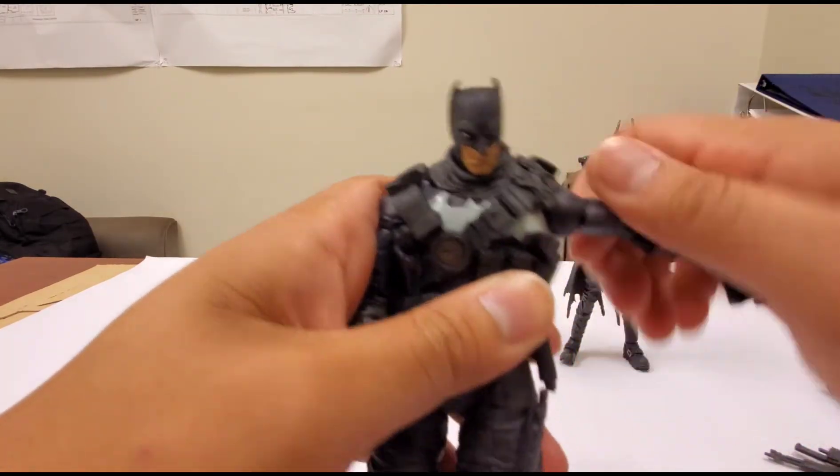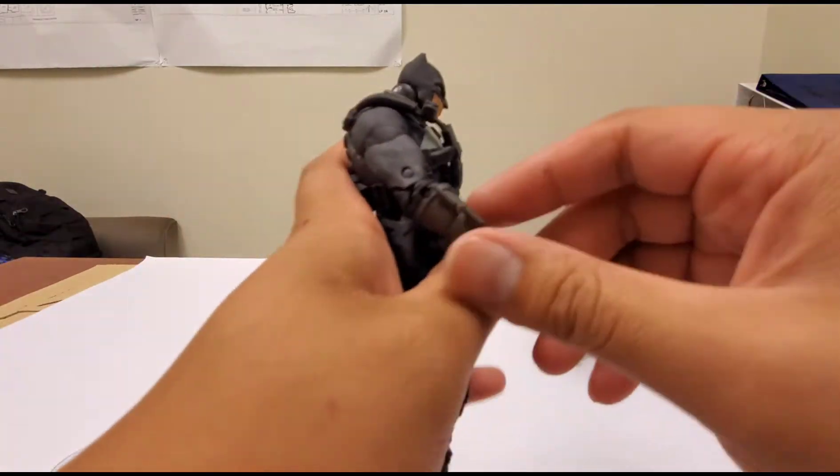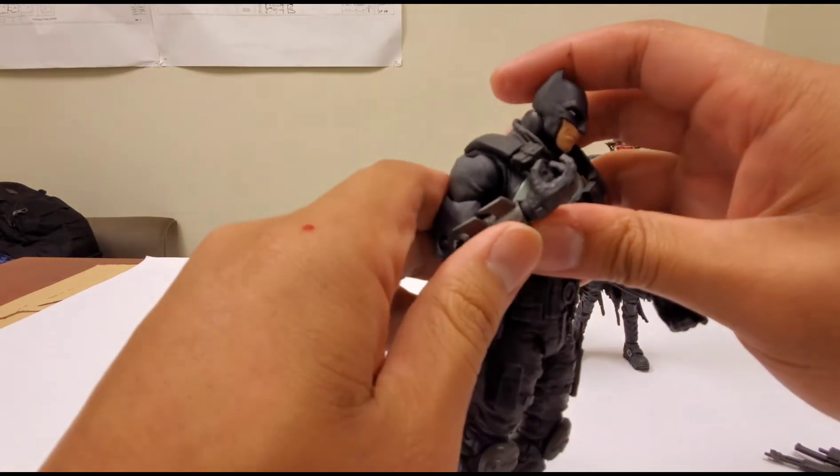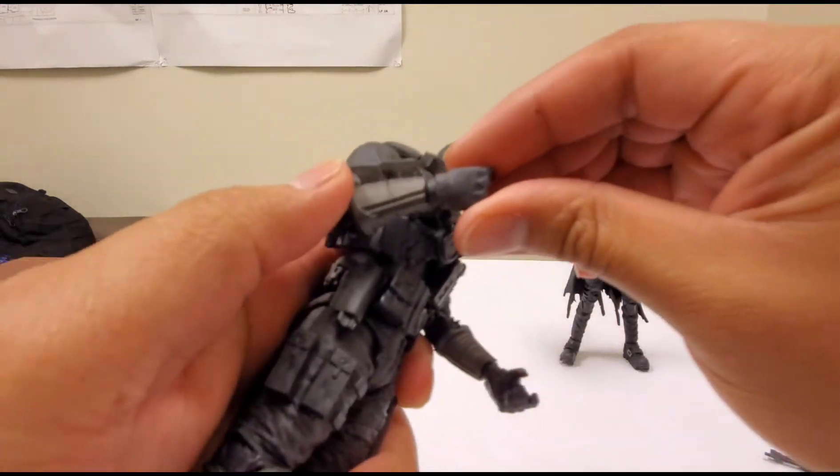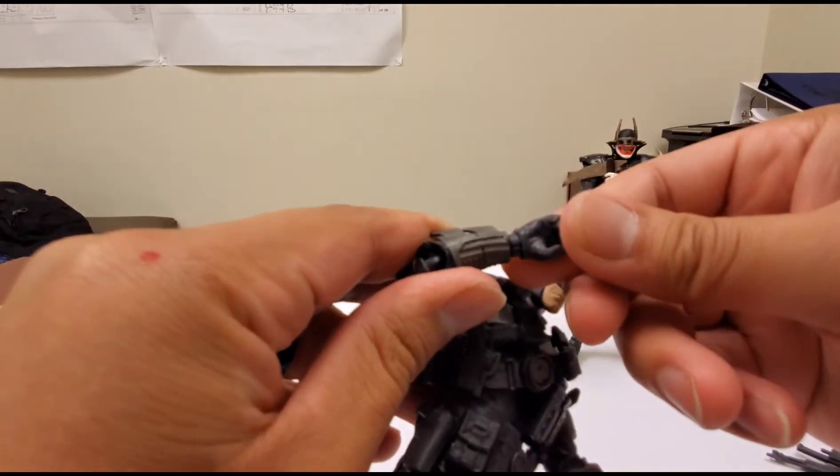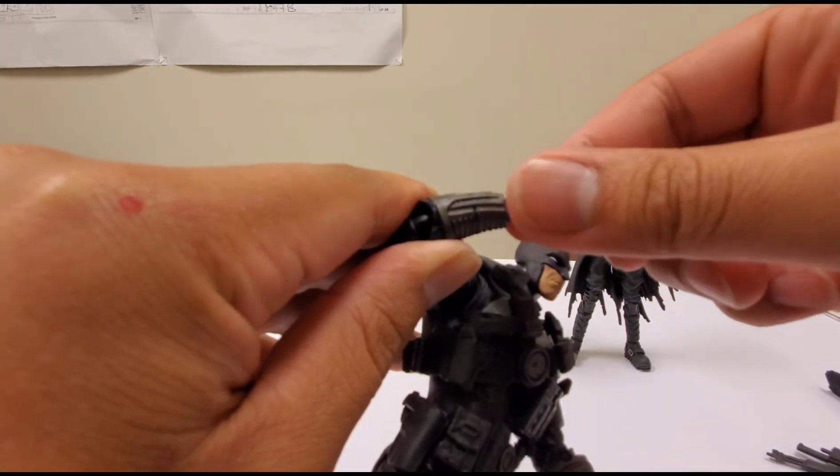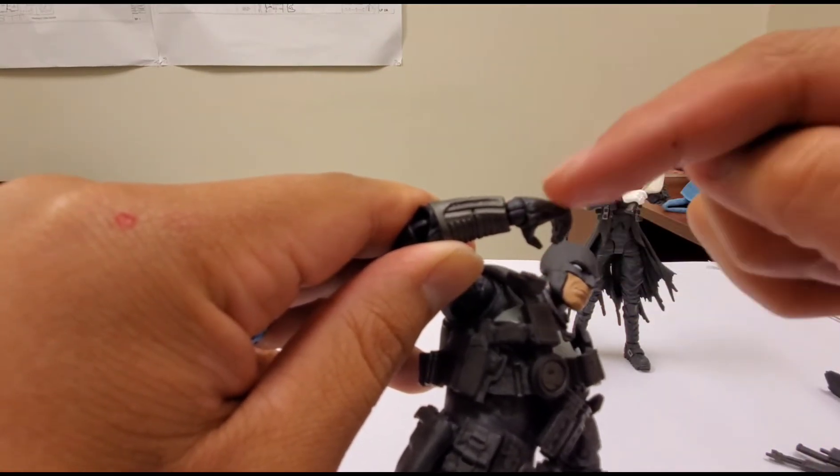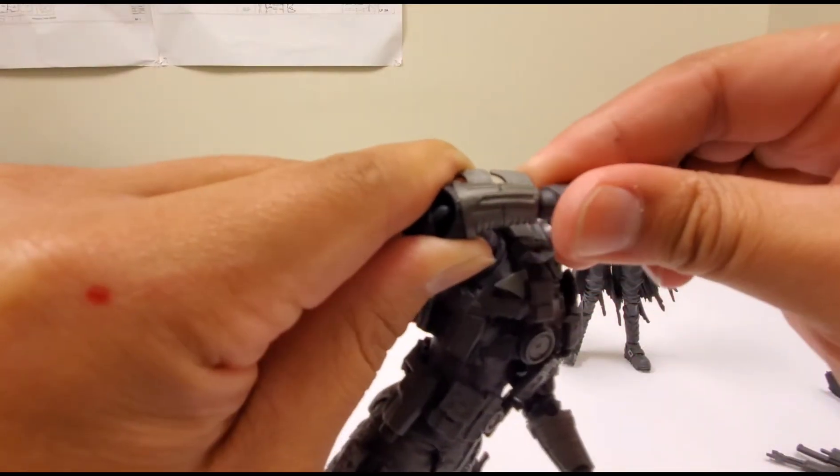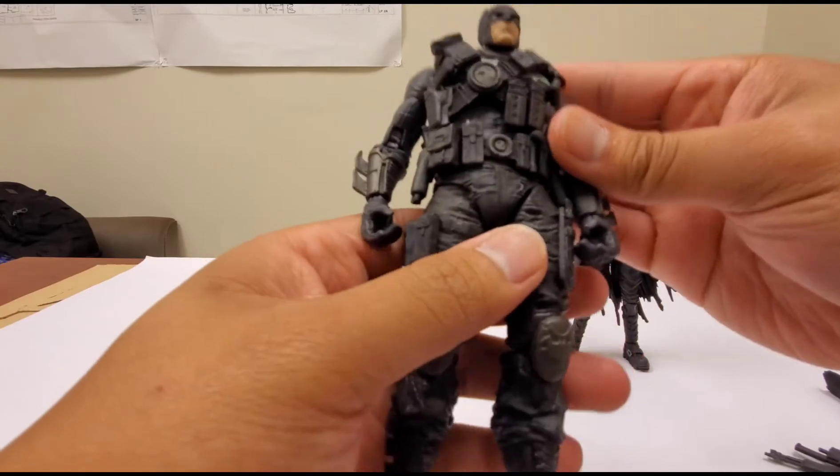Bicep swivel, double bend at the elbow, pretty good. When it comes to the wrist, it's on a ball swivel. It does have a hinge depending on the ball position. You can move the wrist down and up, and then you rotate the hand and you get that side and the other side.